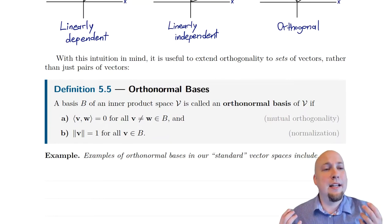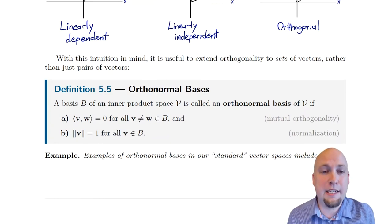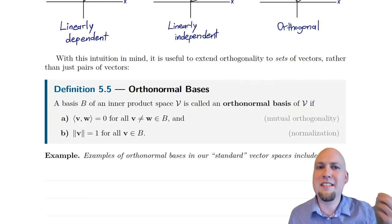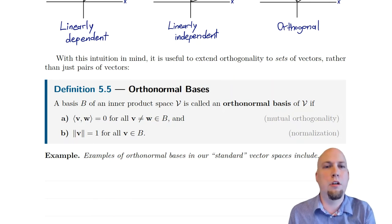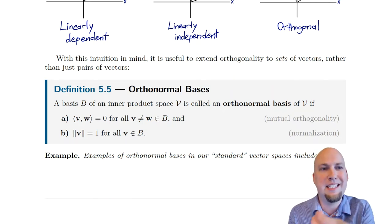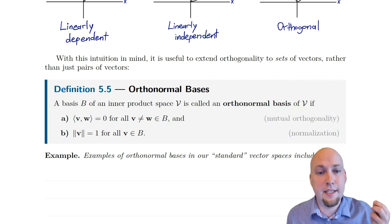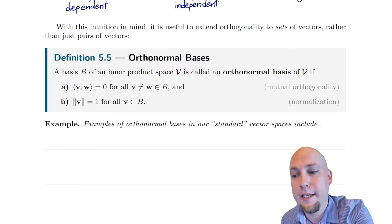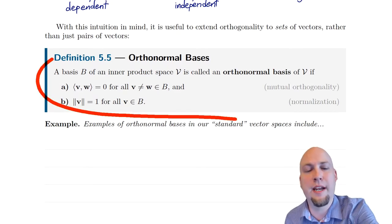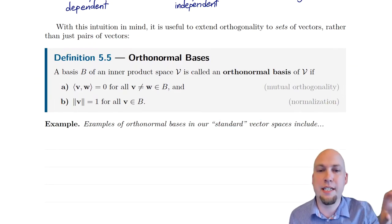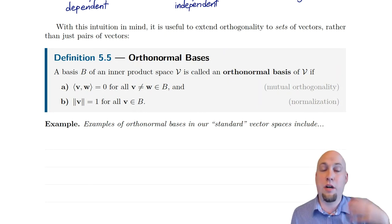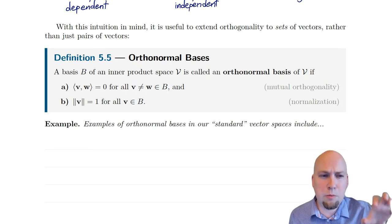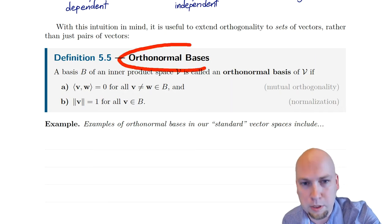Because linear independence is one of the main ingredients in bases, now that we have linear independence on steroids it makes sense to ask: what happens to bases if you have this stronger notion of linear independence? What happens to bases if you have orthogonality instead? Now that we understand orthogonality, let's think about bases where you have this orthogonality requirement rather than just linear independence. We call these orthogonal bases, and if we throw in one other minor condition we get something called orthonormal bases.